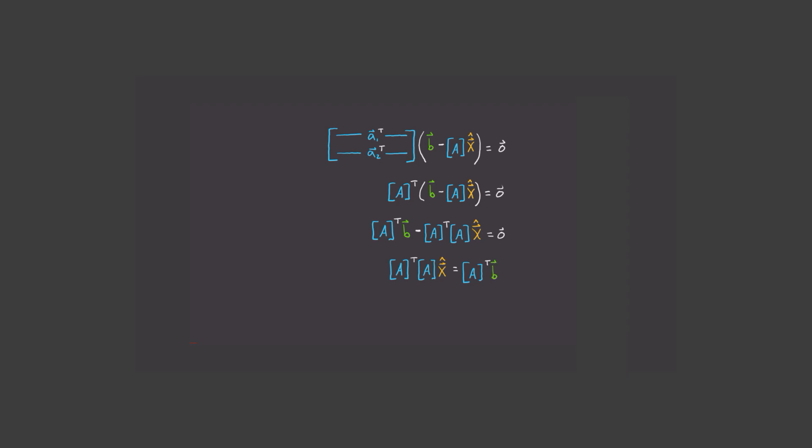Now there are many algorithms used to solve x hat from here. But if A transpose A is invertible, we can just go further and write x hat is equal to A transpose A, all inversed, times A transpose B.